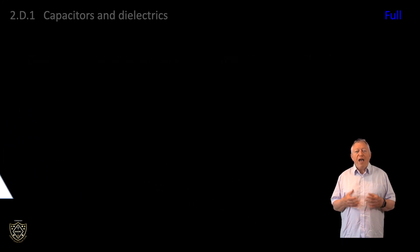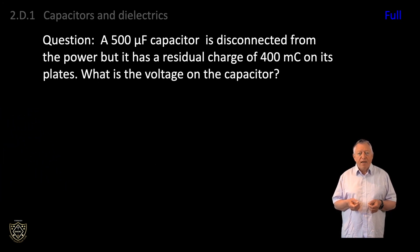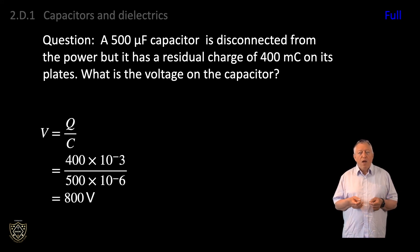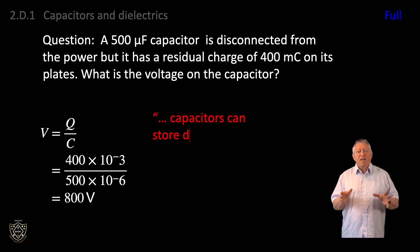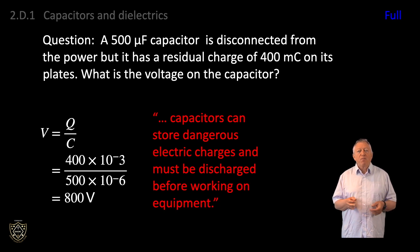Another question. A 500 microfarad capacitor is disconnected from the power, but it has a residual charge of 400 millicoulombs on its plates. What is the voltage on the capacitor? Here we use a triangle to change the subject of the formula. V equals Q over C, which equals 400 millicoulombs divided by 500 microfarads, which works out to be 800 volts. This illustrates a safety point that is covered in syllabus item 8A1, that capacitors can contain dangerous electric charges and must be discharged before working on equipment.